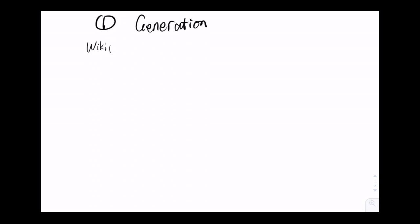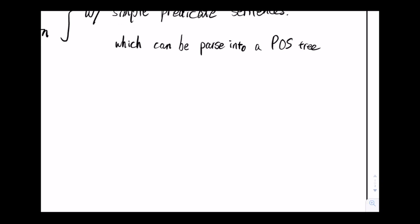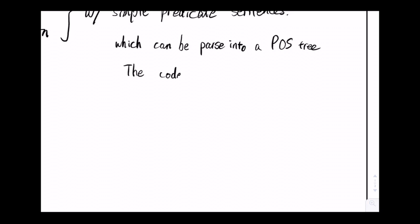The first kind of question we're going to generate are binary questions. Binary questions can be divided into two parts: yes or no questions or choice questions. These questions can be generated by looking for some simple predicate sentences. These sentences will be parsed into a part of speech tree.